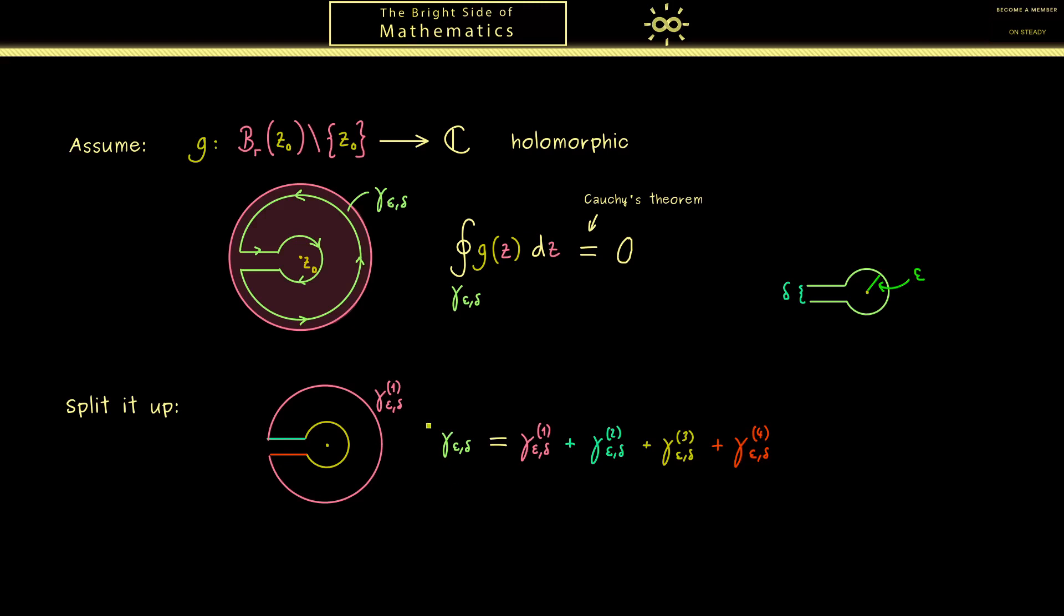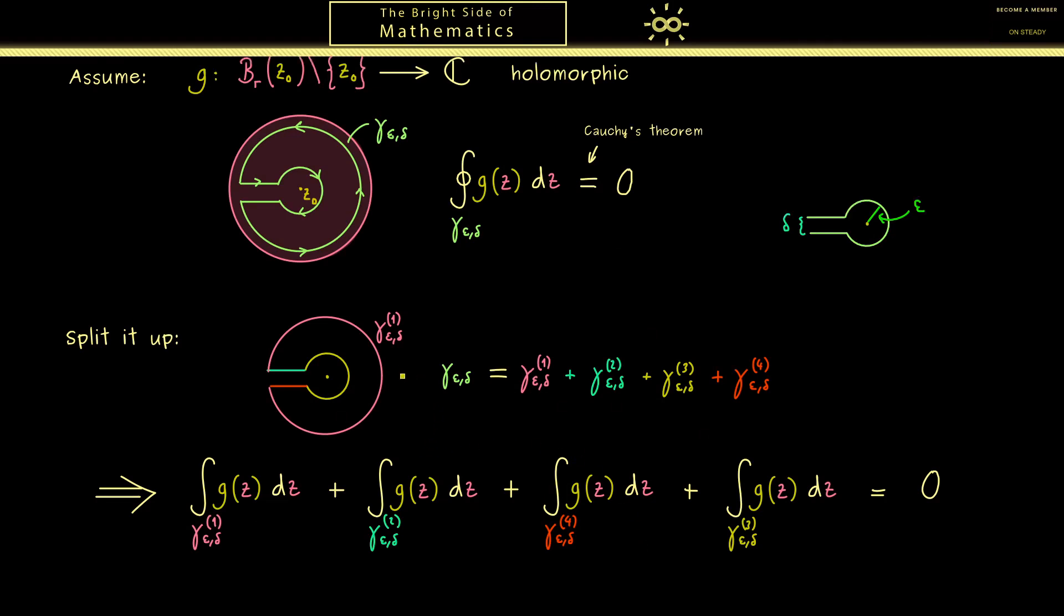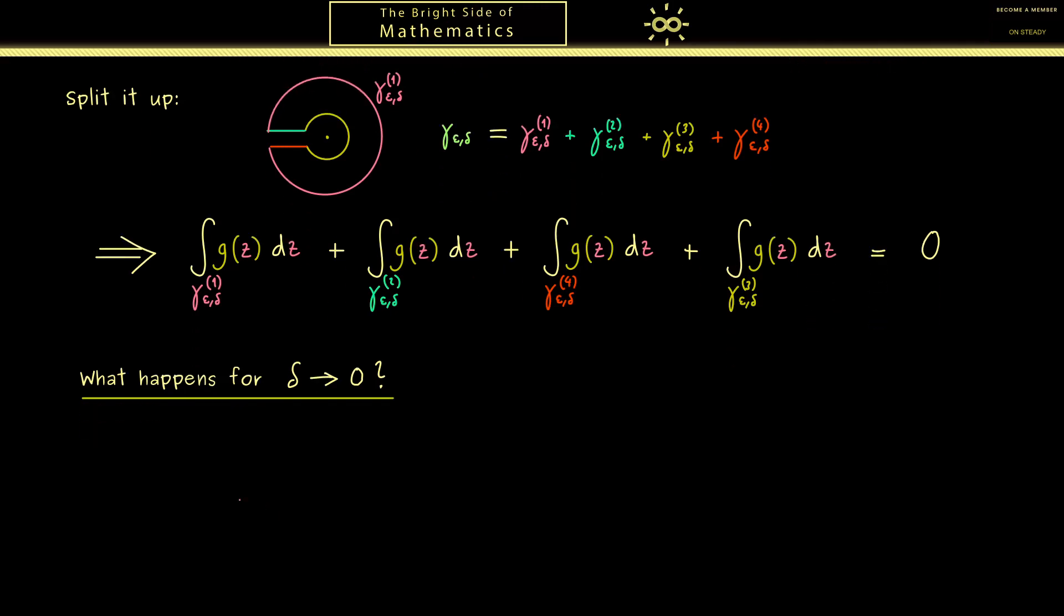Now I can tell you what I want to do in the end is to send delta to 0. Then the question is, what can we say about the contour integrals of all these curves here. Obviously the first thing we can conclude from above is that the sum of all these contour integrals along these curves here is 0. This fact holds no matter how small delta is chosen.